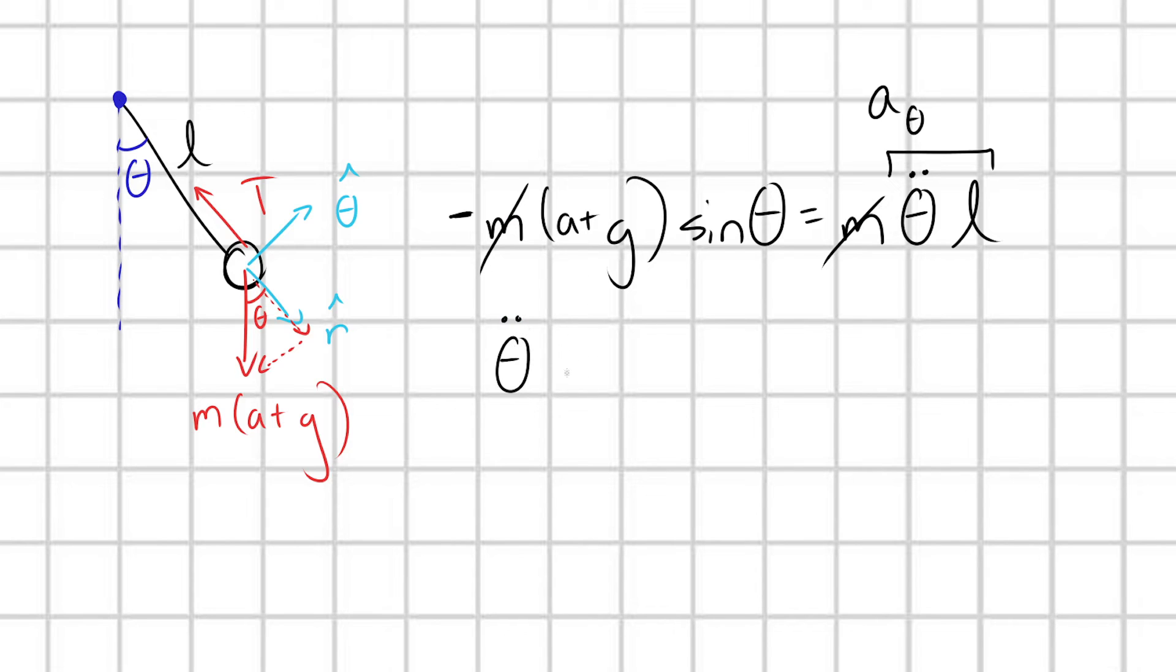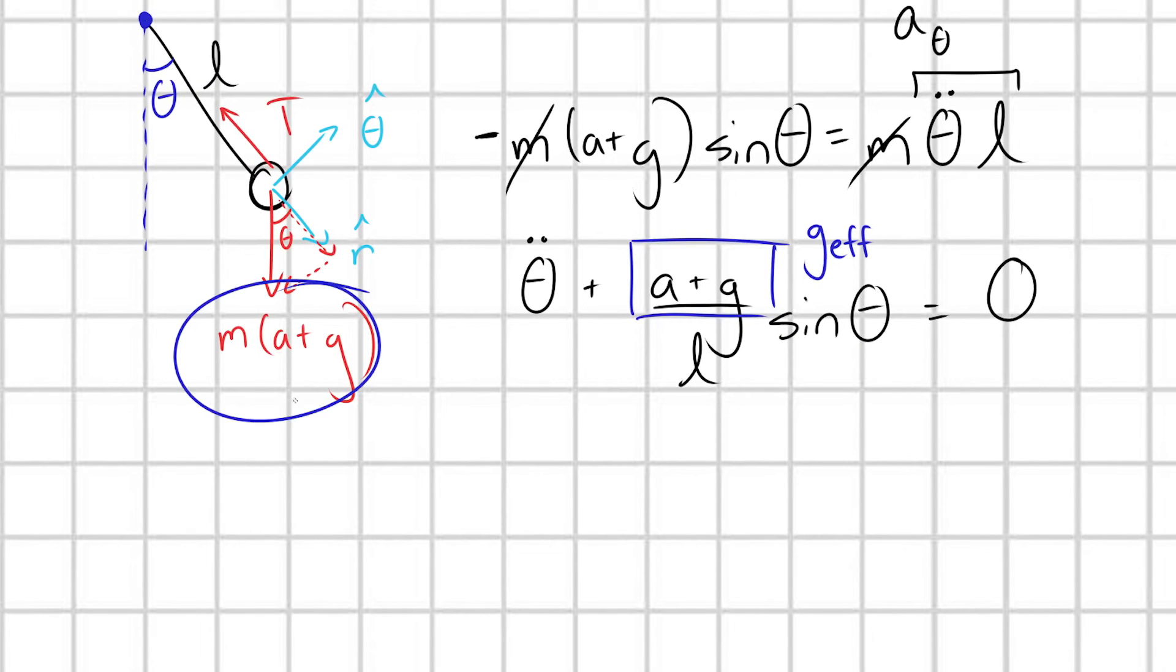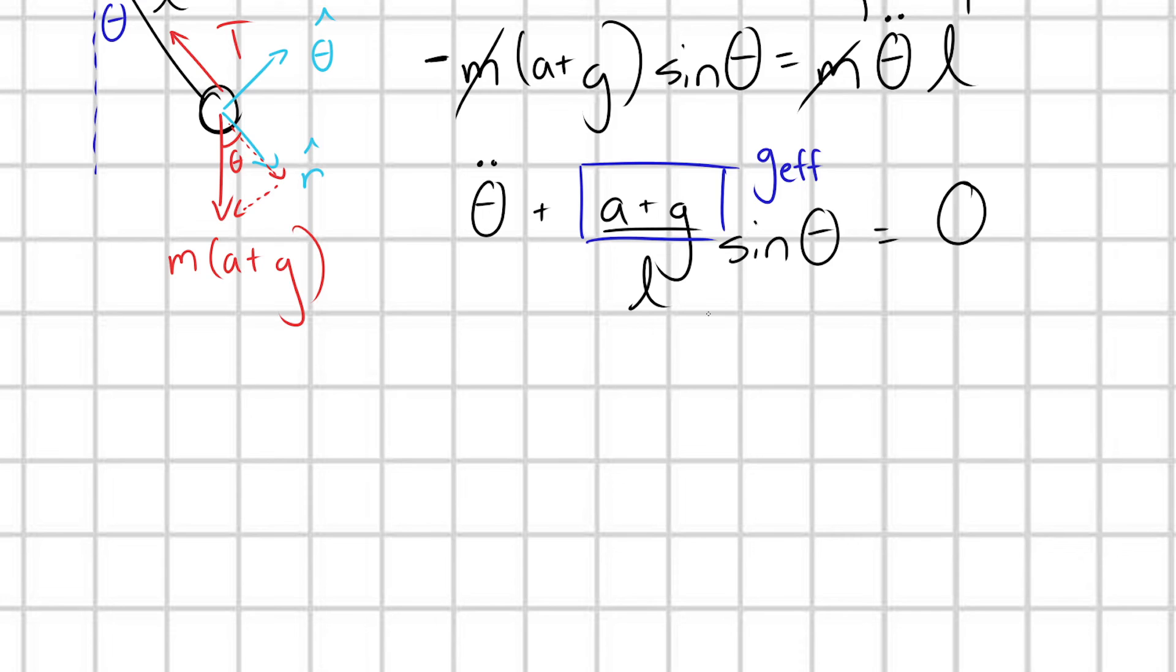Theta double dot plus A plus G over L sine theta is equal to, let me make the sine theta more clear. Here we go. Sine theta is equal to zero. And now just to make things super duper clear and nice and easy, I'm going to take this A plus G term and we're going to redefine this as our effective gravitational acceleration. Just like how over here I called this my effective gravitational force, now I'm simply calling A plus G my effective gravitation acceleration. And so I have theta double dot plus G effective over L sine theta is equal to zero.